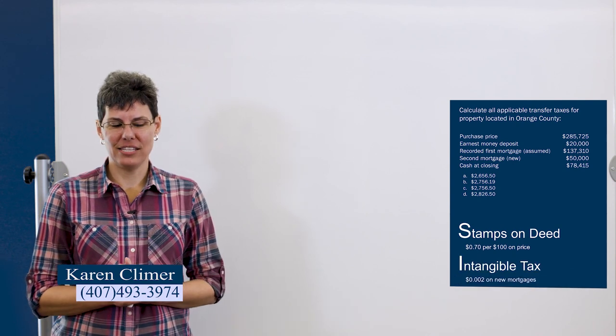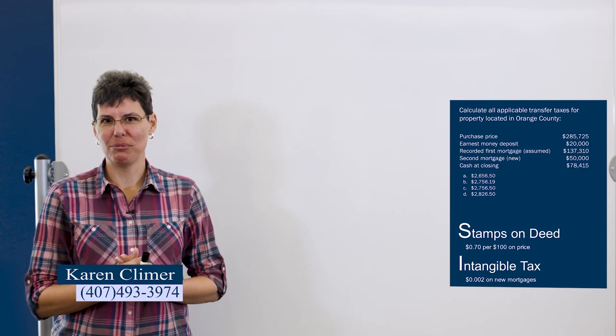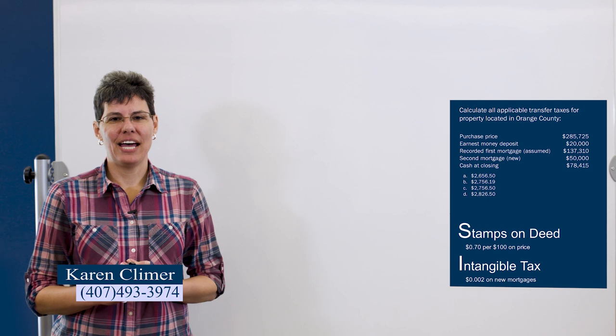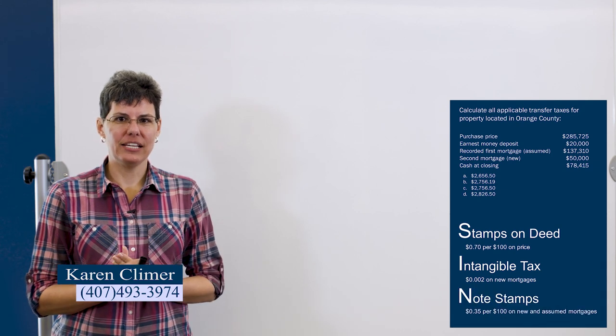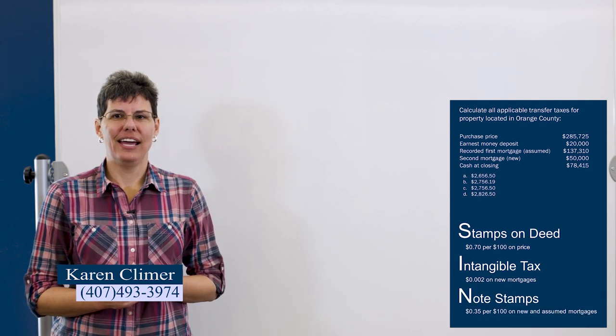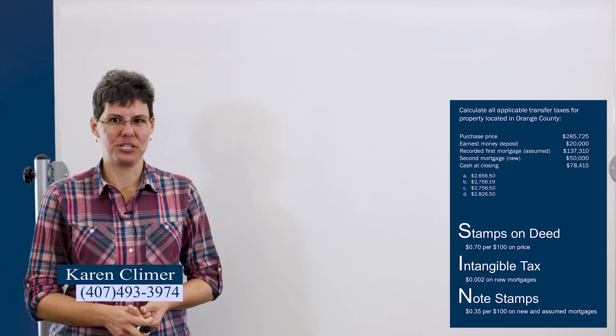Intangible tax, the I, is 0.002. I usually say 0.002. And that is paid on new mortgages, brand new mortgages. The N is note stamps and that's 35 cents per hundred dollars and that's paid on new and assumed mortgages.